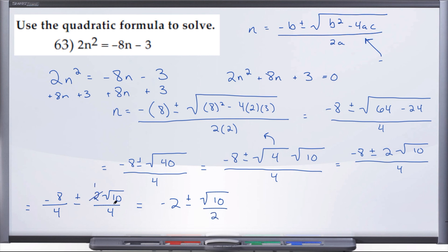2 goes into itself once, 2 goes into 4 twice, so we have 1/2. And here is our final answer: n = -2 ± √10 / 2.